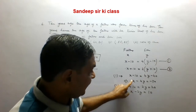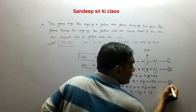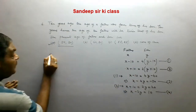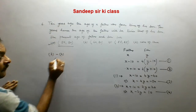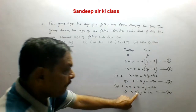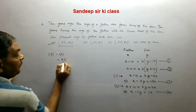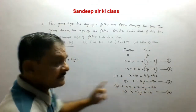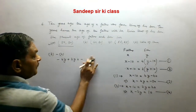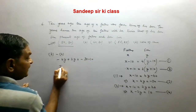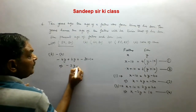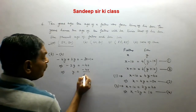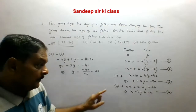Now subtracting equation 3 from equation 4: (X minus 4Y) minus (X minus 2Y) equals minus 30 minus 10. This gives minus 2Y equals minus 40, so Y equals minus 40 divided by minus 2, which equals 20.